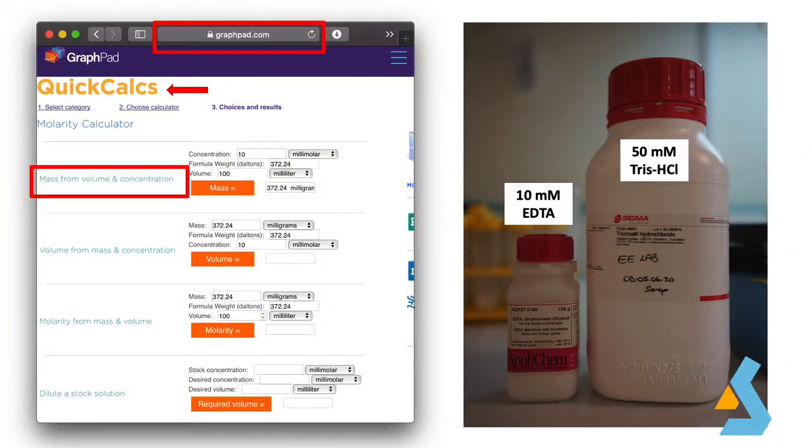For the calculation, if you do not trust your dimensional analysis or you just want to simply save time, you can use the GraphPad Quick Calculations website. At the very top, you can calculate the required mass from volume and concentration. Once you type in the final concentration, molecular weight of your chemical, and the final volume of your mixture, you can obtain the amount needed. For example, for a 10 millimolar 100 milliliter EDTA solution, we need to weigh 372 milligrams of EDTA powder.